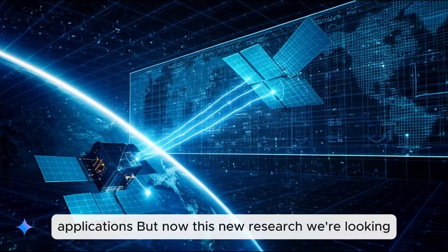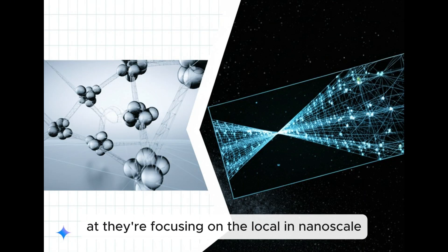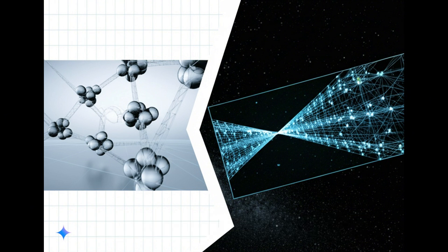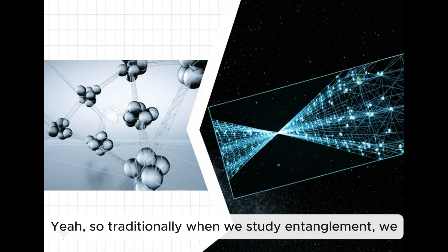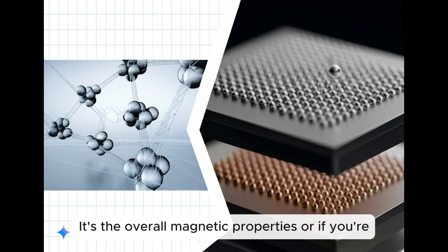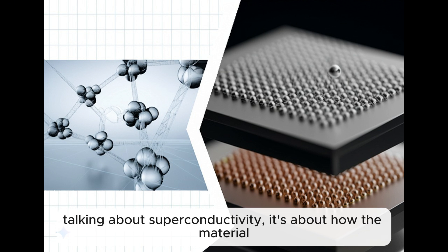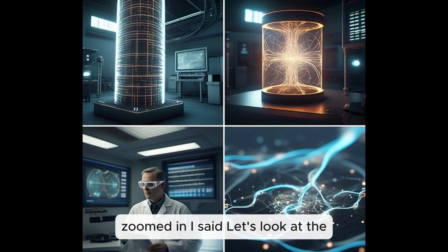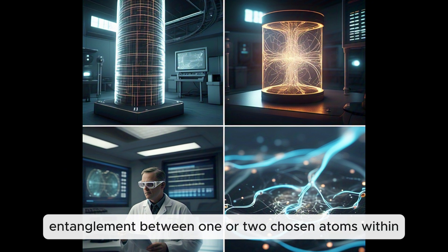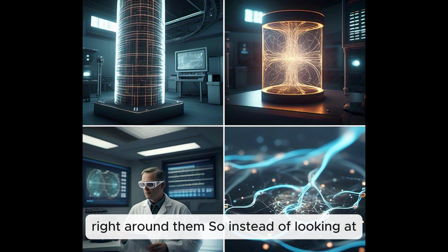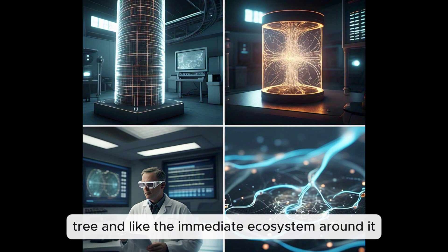And this isn't just a theoretical curiosity, right? This entanglement idea has real implications. Huge implications. This is the foundation for things like quantum computers, which could be exponentially more powerful than our current computers. And it's also key for quantum cryptography, which is all about creating super secure communication channels. But now, this new research we're looking at, they're focusing on local entanglement in nanoscale systems. So what does that actually mean?